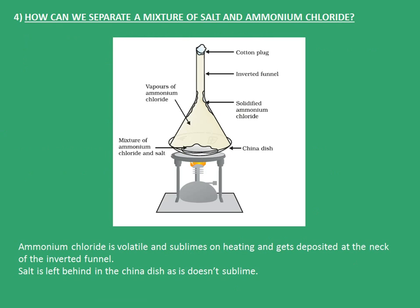The fourth one is: how can we separate a mixture of salt and ammonium chloride? In this case, ammonium chloride is volatile and sublimes on heating, and it gets deposited at the neck of the inverted funnel. Salt, which is a non-volatile component, is left behind in the china dish. The experimental setup consists of a china dish kept on a burner, and in this china dish we have taken the mixture of ammonium chloride and salt.